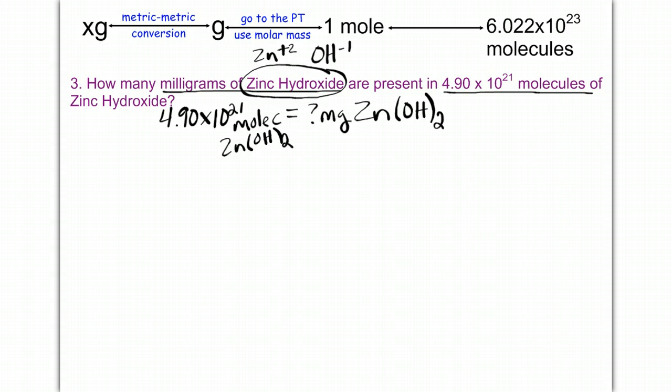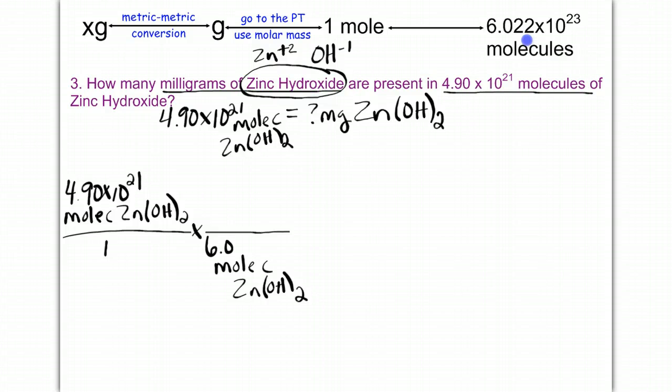I'm given 4.90 times 10 to the 21 molecules of zinc hydroxide. So this problem is actually going to be pretty long because it starts all the way on the right with molecules, and I need to end up on milligrams, which is all the way on the left, an x-gram. So this is going to be every single step possibly that could be asked of you. So put my given over 1, 4.90 times 10 to the 21 molecules of zinc hydroxide times draw a line. I'm going to bring down molecules of zinc hydroxide. And if I need molecules, then I want to use Avogadro's number. So I'm going to start here, and I'm going to use 6.022 times 10 to the 23rd. I want to go from molecules to moles. So that's what goes on top, 1 mole of zinc hydroxide.